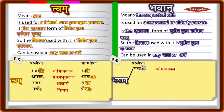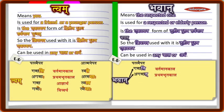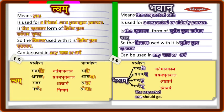For a parasmaipada dhatu like 'gam' (gaccha), in vartamana kala it is 'bhavan gacchati' — the respected one is going. In prathama bhutakala it is 'bhavan agacchat' — the respected one went. In adhyartha (imperative mood) you say 'bhavan gacchatu' — may the respected one go. And in vidhyartha (potential mood) it is 'bhavan gacchet' — the respected one should go.